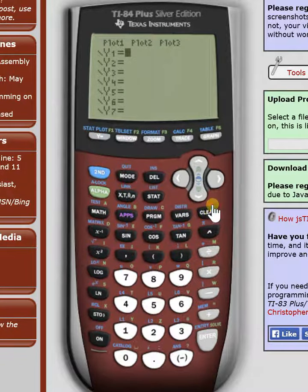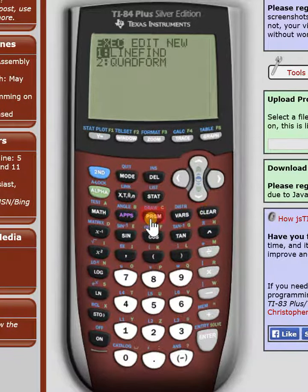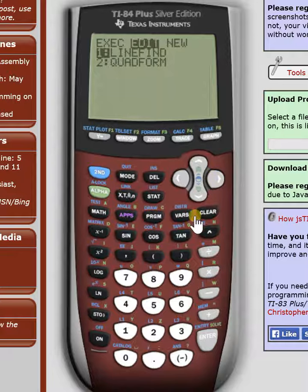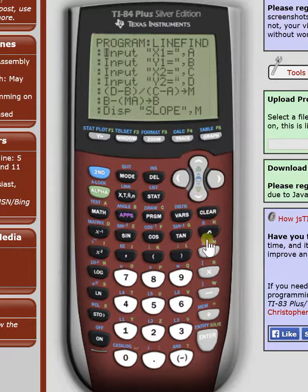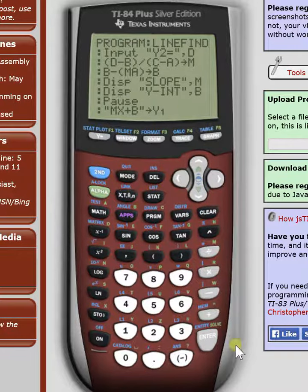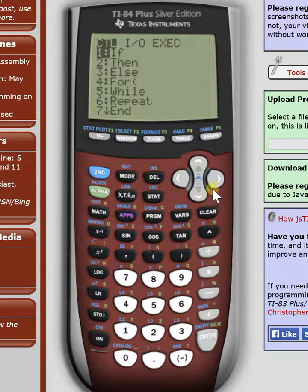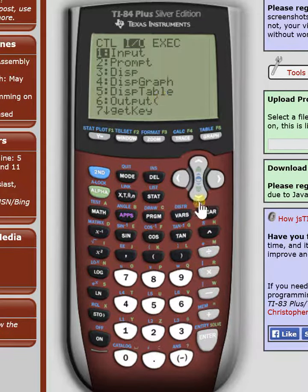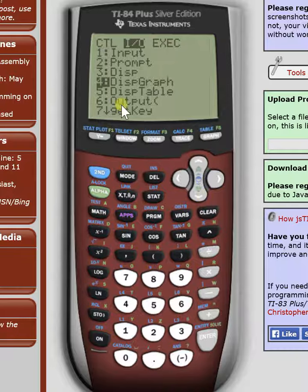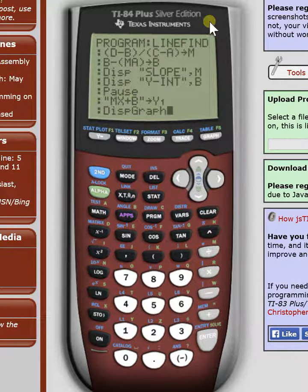And what this is going to do is that's going to stick this in your y equals menu. So that's what that's going to do, and it's going to enable it to graph it. You're going to hit enter one more time. Go into program, and scroll down to four, display graph. And that's it. That's going to display your graphing function.